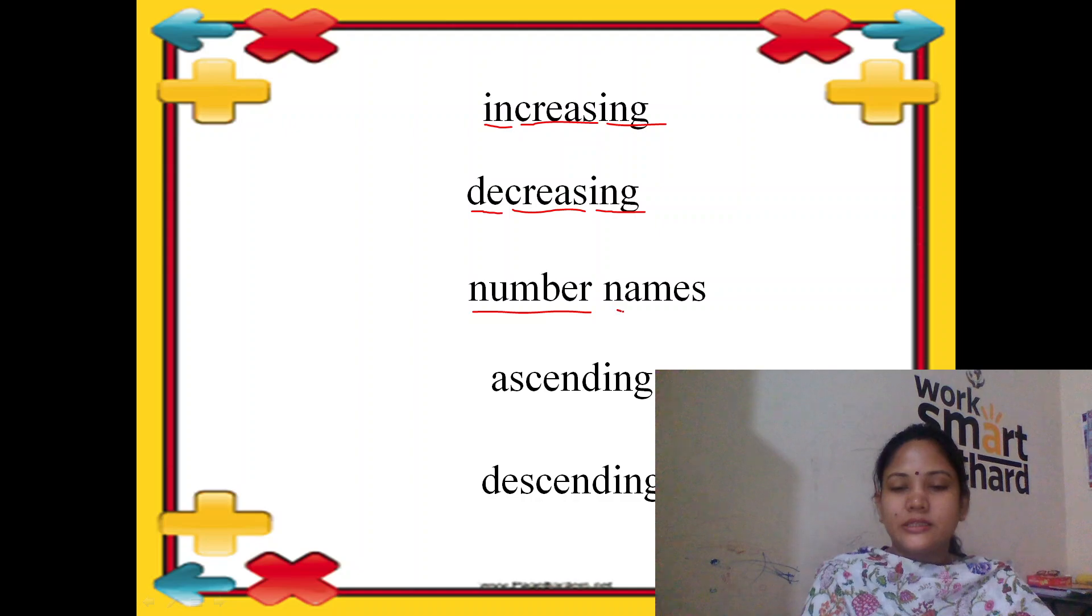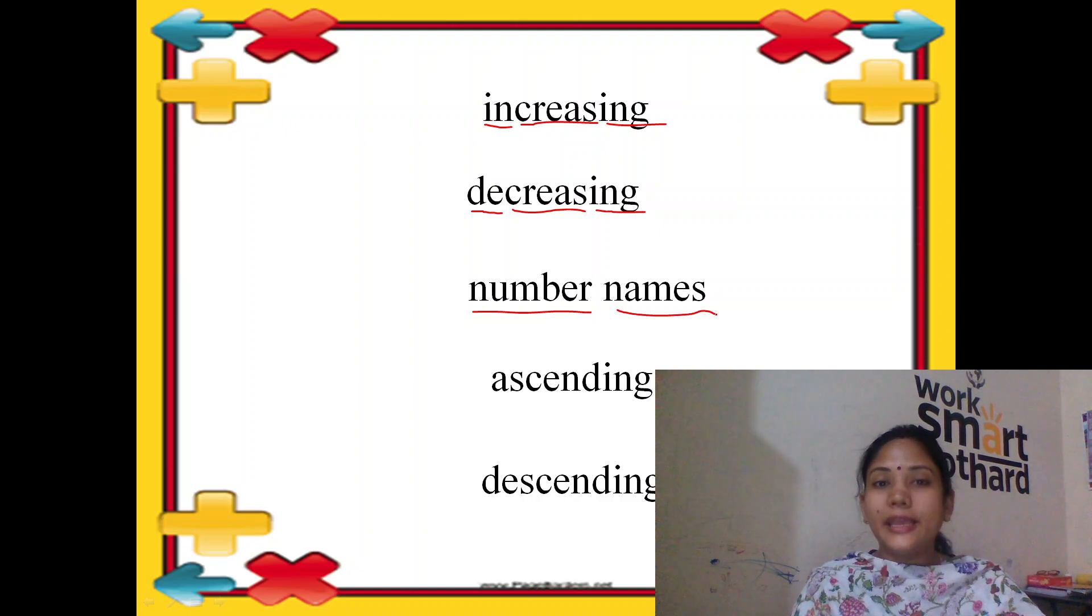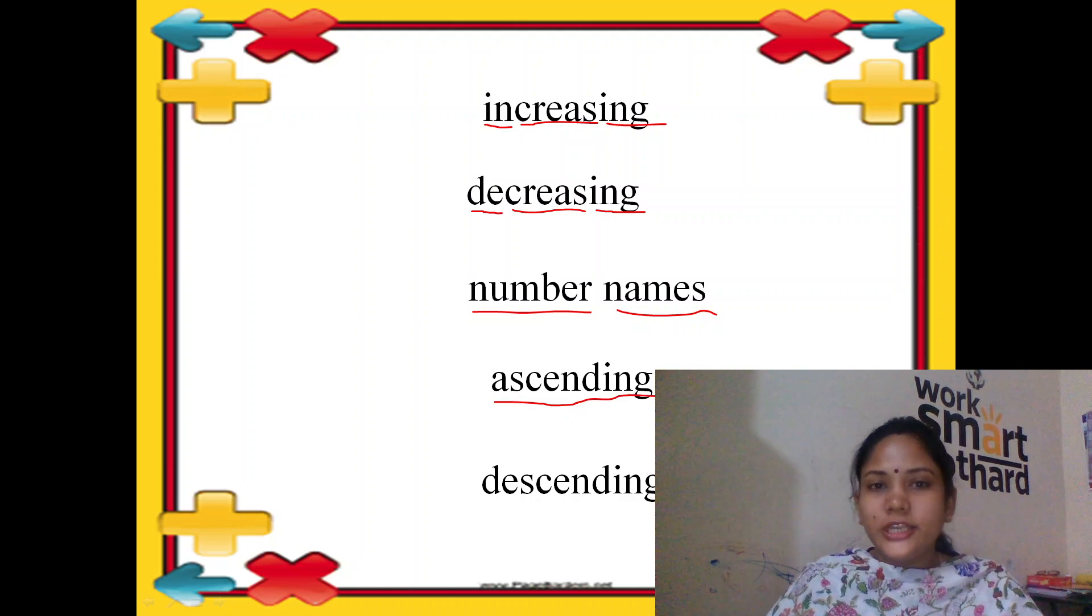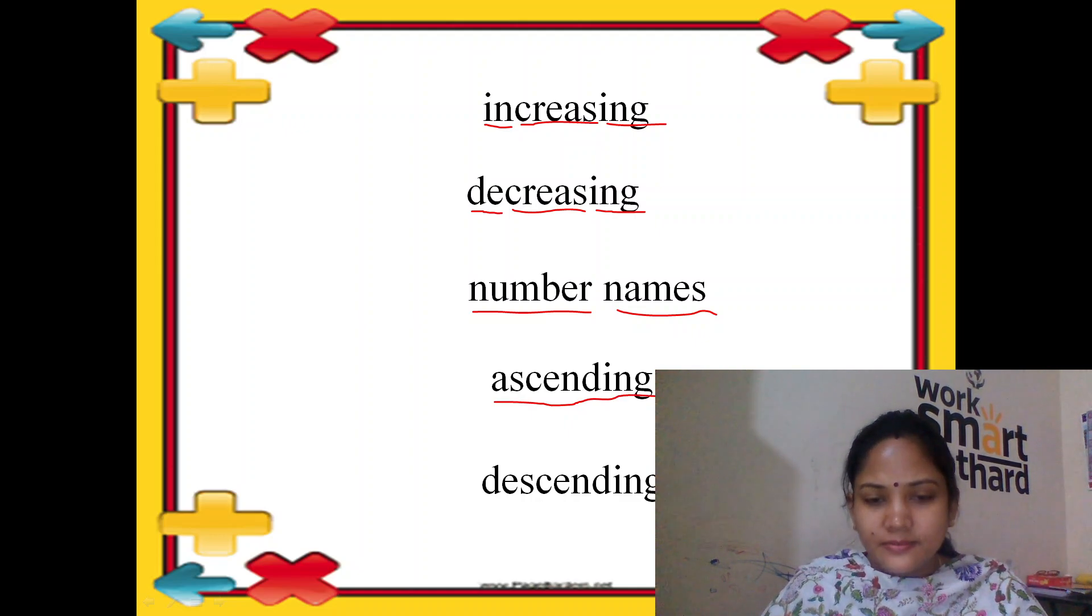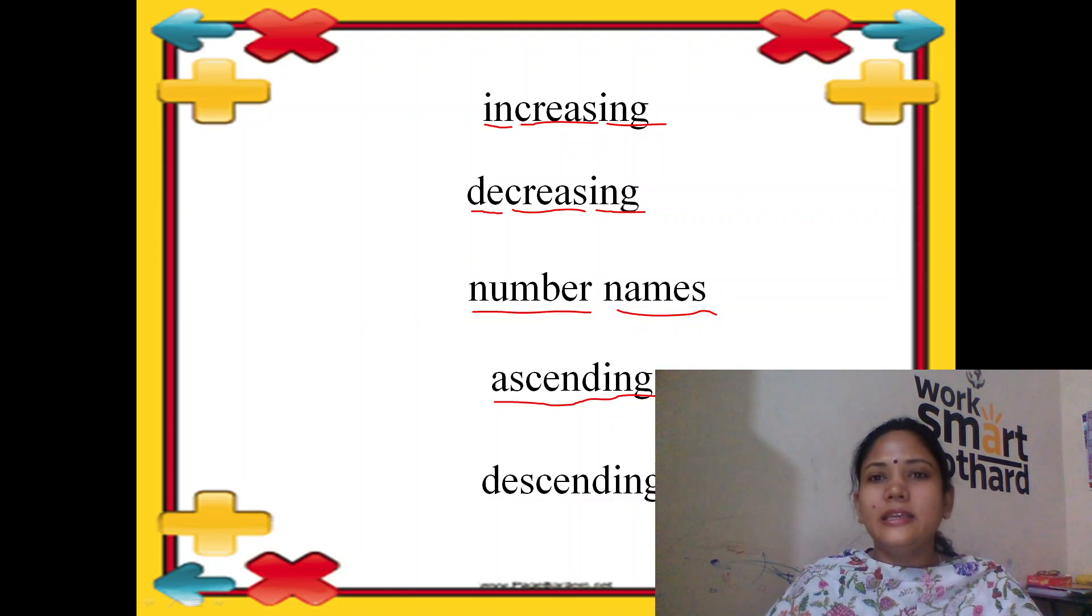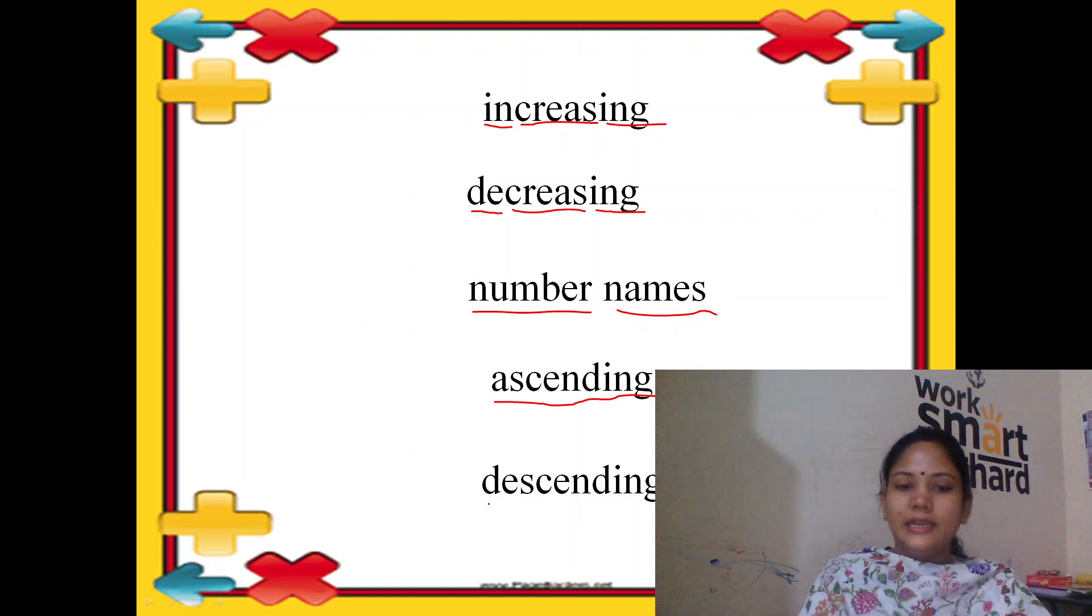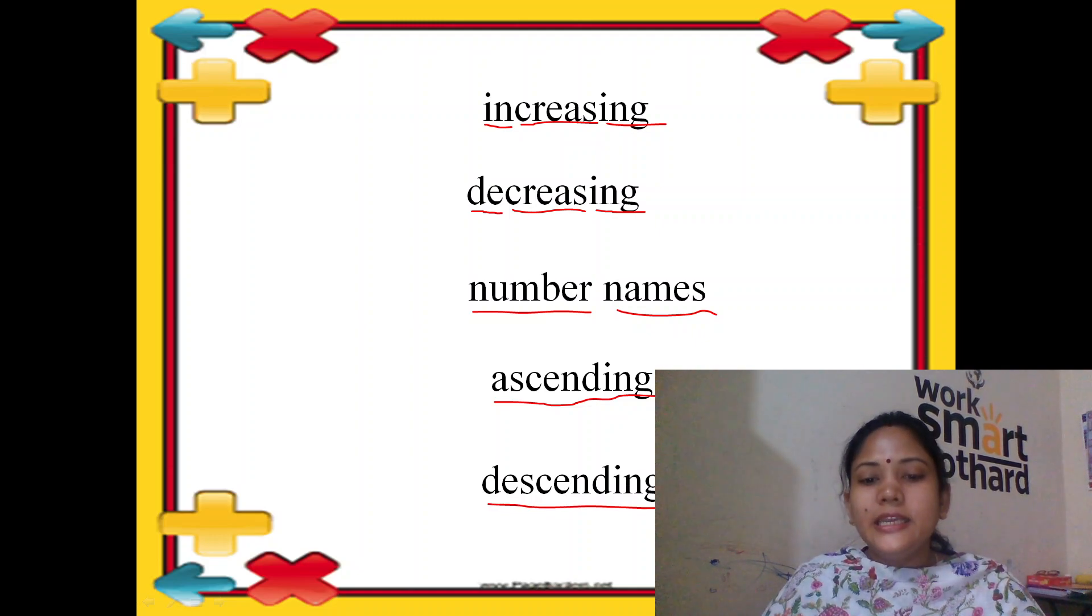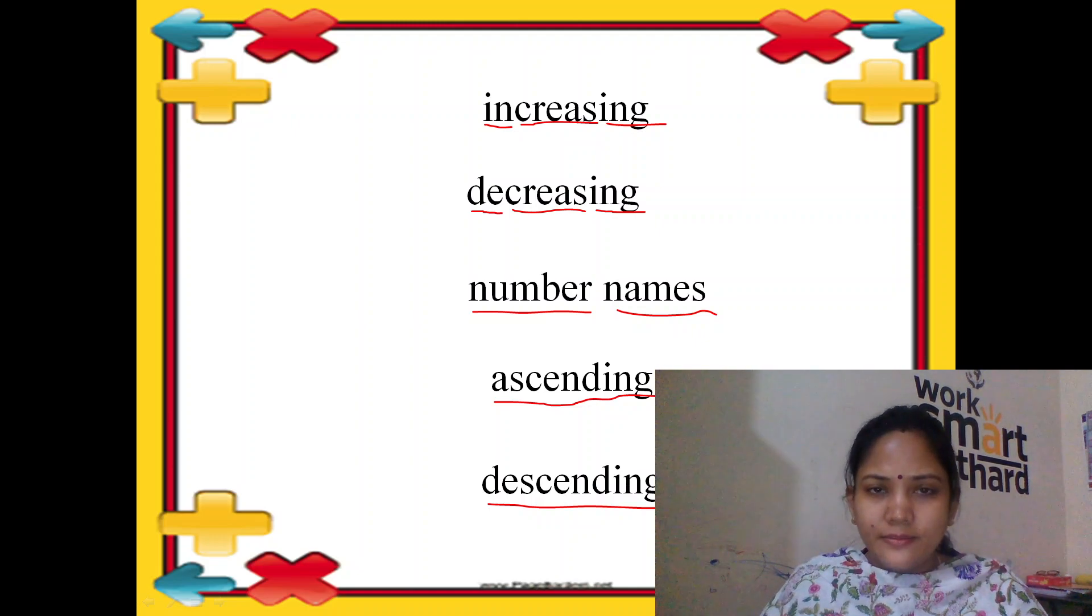Names N-A-M-E-S. Names. Number Names. Next is A-S-C-E-N-D-I-N-G. Ascending. And the last one is D-E-S-C-E-N-D-I-N-G. Descending. Kya hai? Descending.